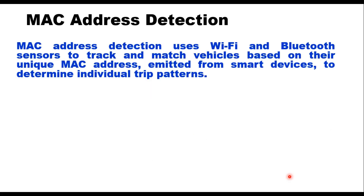The next method is MAC address detection. MAC stands for Media Access Control address. This method uses Wi-Fi and Bluetooth sensors to track and match vehicles based on their unique MAC address emitted from smart devices, to determine individual trip patterns. Advantages: easy to install and remove, provides complete route information with high accuracy even on high-volume roads, and no manual labor is required. Disadvantages: sensors must be installed around points of interest, lower sample size than automatic license plate readers, and it can only collect data from vehicles carrying smart devices.